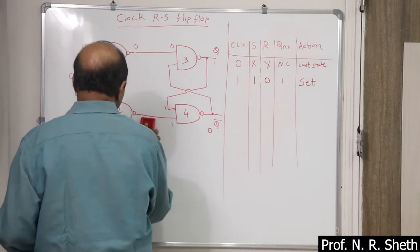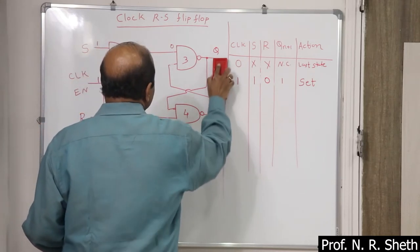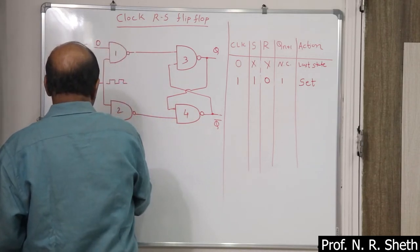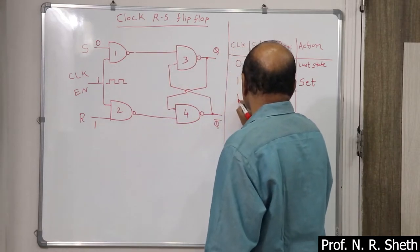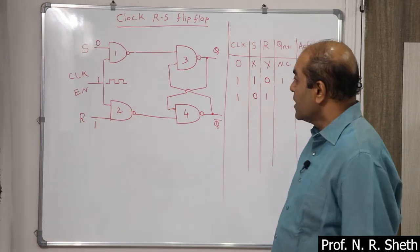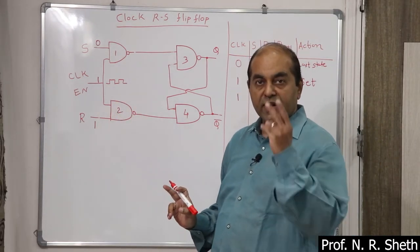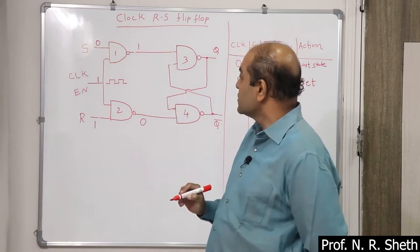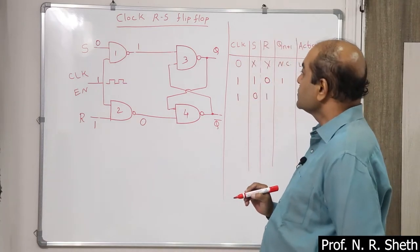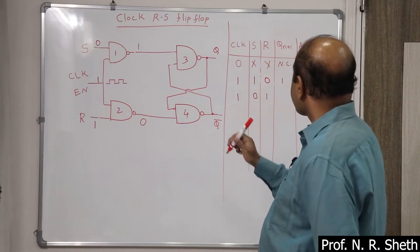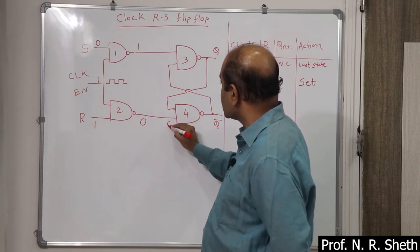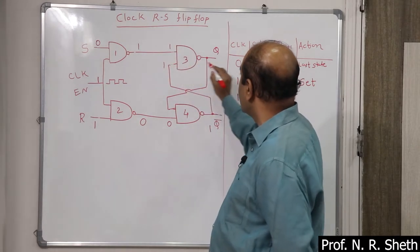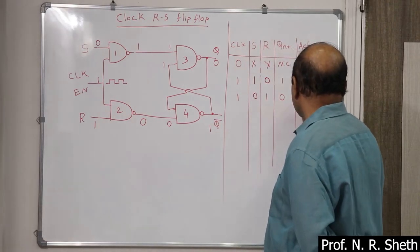Another case: clock is present, S is 0, R is 1. Clock is 1 so both inputs of gate 2 are high, output is 0. One input of gate 1 is 0, output is 1. Gate 3 has one input 0, so output is 1 — Q bar is 1. Gate 4 has both inputs high, output is 0, so Q is 0. We can say that the flip-flop is reset.